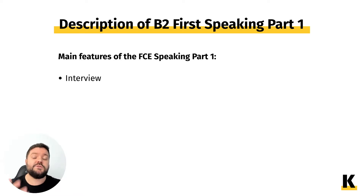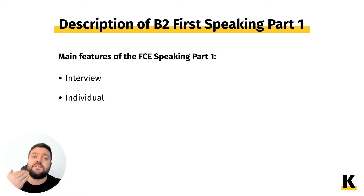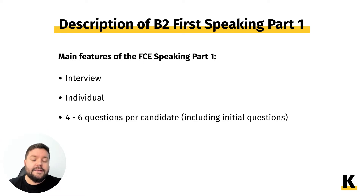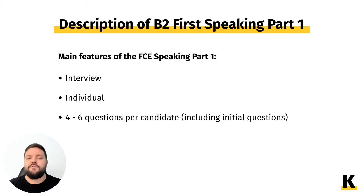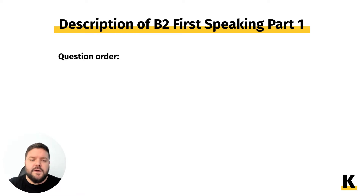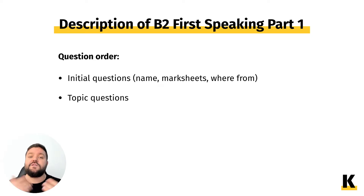This part of the speaking is essentially an interview, which means the examiner will ask you questions and you will have to answer them. It is done individually — even though you have a partner for the exam, these questions are addressed to you and you answer them alone. In total, including the initial questions, each candidate will answer around four to six questions. The order starts with initial questions — name, mark sheets, where you're from — followed by topic-based questions.